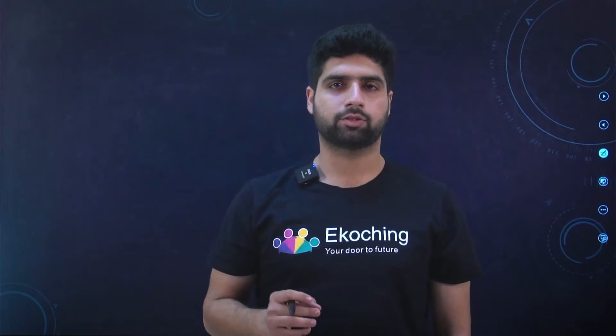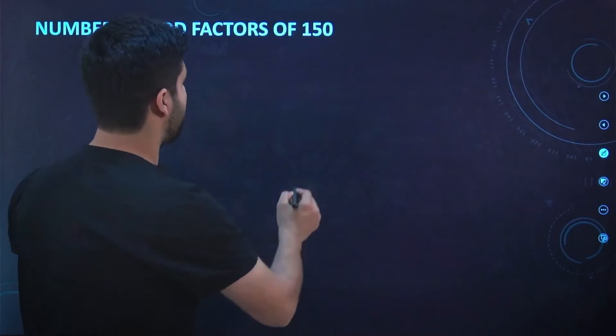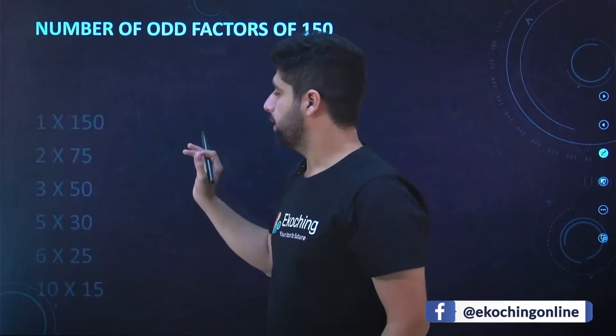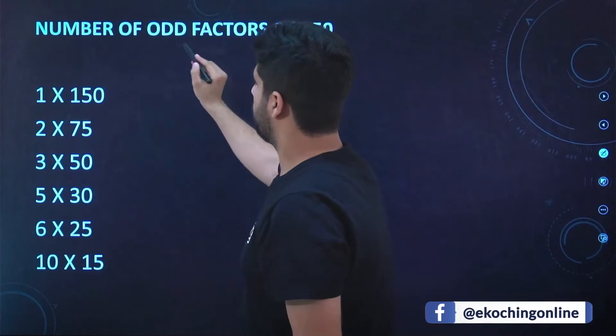Hi, in this video we'll talk about finding the number of odd factors of any given number. For example, the number we have is 150. If I write all its factors, it will be like this. Now we need to